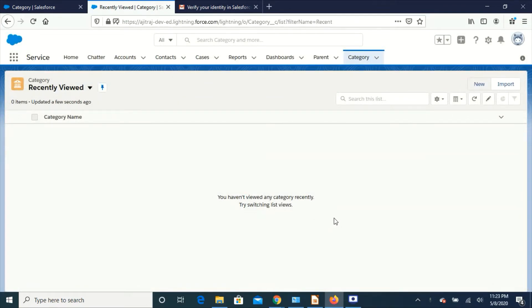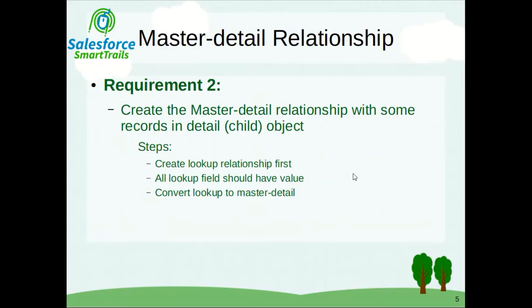We have completed our first requirement. Let's see our next requirement. The second requirement is to create a master detail relationship with some records in the child object. To do this, we have to follow these steps: first, create a lookup relationship; then all the lookup fields should have some values - they should not be blank; and then convert the lookup to master detail.